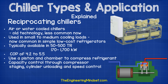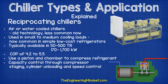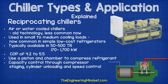Reciprocating compressors were used for air or water-cooled chillers, although this is an older technology which is far less common now. They're used in small to medium cooling loads, though now the technology is much more common in simple, smaller, low-cost refrigerators and refrigeration systems. For chillers, they are typically available from 50 to 500 tons or 170 to 1,700 kilowatts. They have a COP of around 4.2 to 5.5, and they use a piston and chamber to compress the refrigerant. Capacity is controlled through compressor staging, cylinder unloading, and speed control.